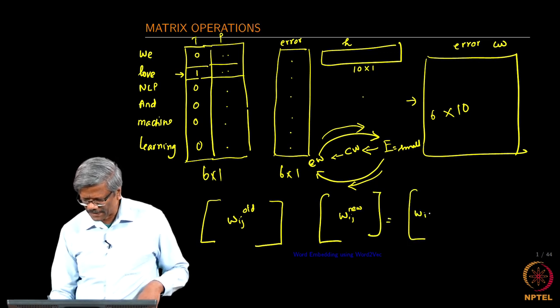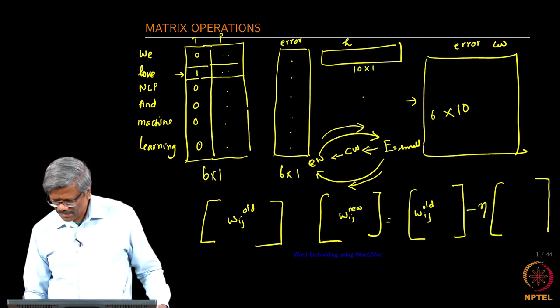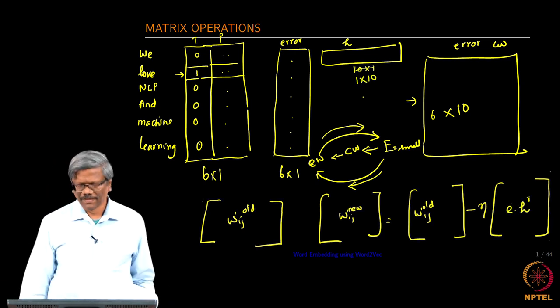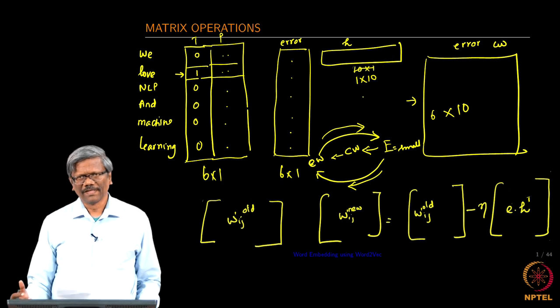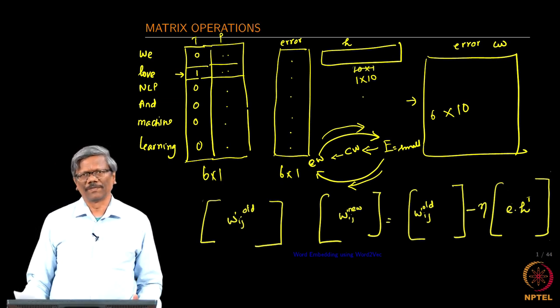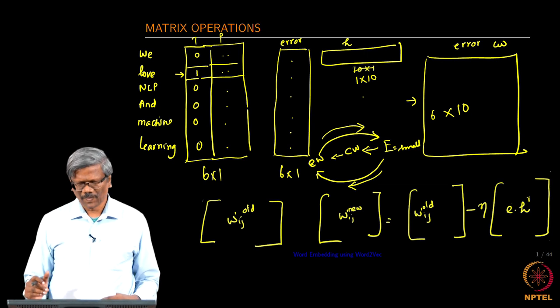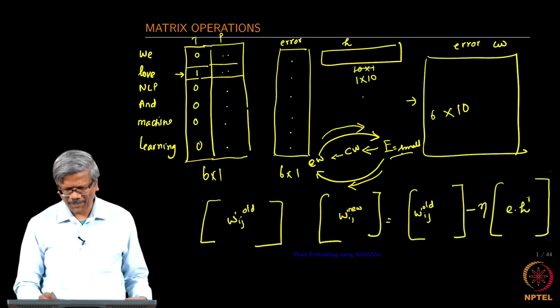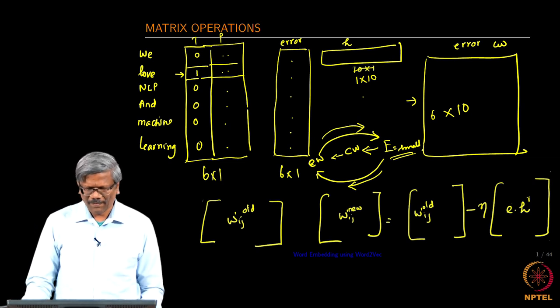Once you do this now you have updated the context weights and then taking the error back to the embedding layer we can update the embedding layer weights in the same fashion. Once it is updated, you keep going back and forth until e becomes small. I keep repeating this so that you know it gets into the minds clearly.